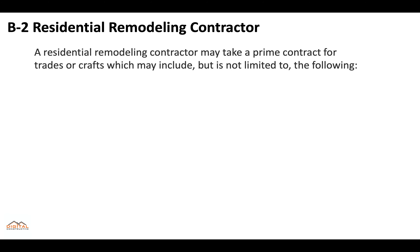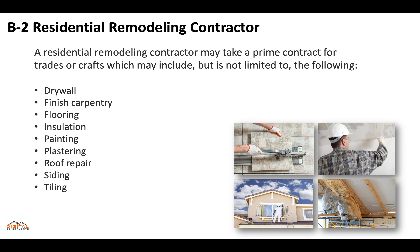With the B2 license, a residential remodeling contractor may take on a prime contract for trades or crafts, which may include but is not limited to the following: drywall, finished carpentry, flooring, insulation, painting, plastering, roof repair, siding, and tiling.